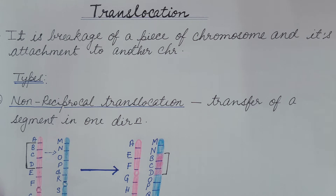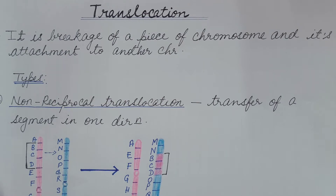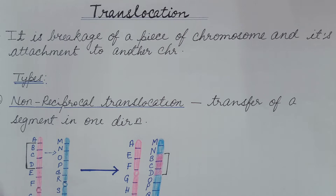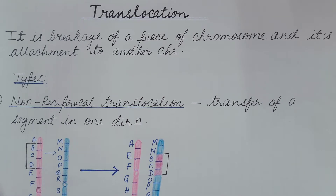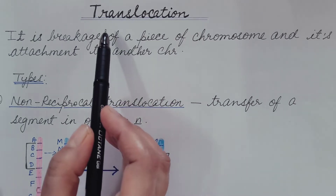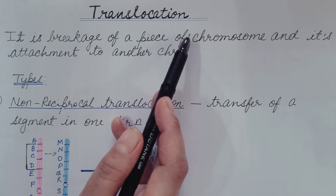Hello friends, we discussed chromosomal aberration in previous videos. Chromosomal aberration is the change in structure of a chromosome. There are four types: deletion, duplication, inversion, and translocation. In part one we discussed deletion and duplication, in part two we discussed inversion. Today we are going to discuss the fourth type of chromosomal aberration — translocation.